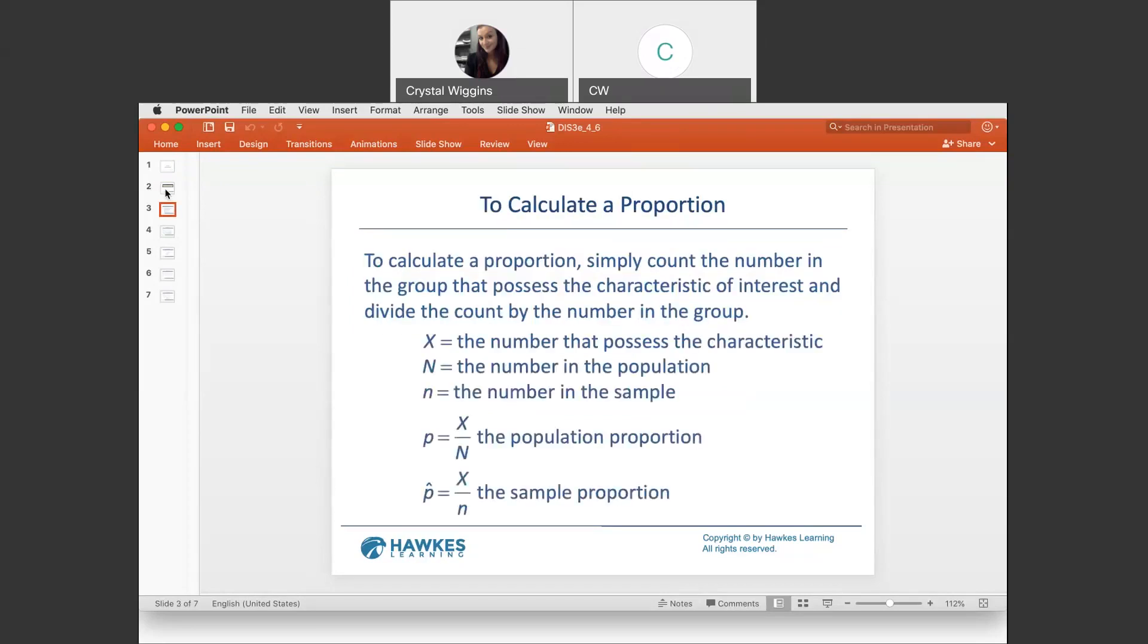To calculate a proportion, simply count the number in the group that possesses the characteristic, such as how many red M&Ms do I have, and divide the count by the total number of the group, the sample size or the population size. If I was curious about the proportion of red M&Ms, it is not likely for me to do a population proportion.